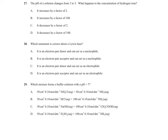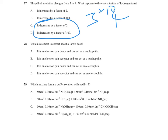Question 27: the pH of a solution changes from 3 to 5. We are getting less acidic, so hydrogen ion concentration decreases. pH is a logarithmic scale, so a change of one pH unit corresponds to a factor of 10. The difference between pH 3 and pH 5 is two units, meaning the concentration changes by a factor of 10 × 10 = 100. Therefore the concentration decreases by a factor of 100, and the answer is D.